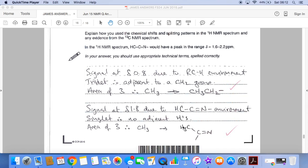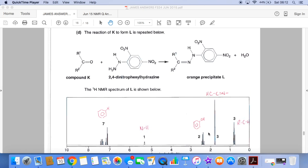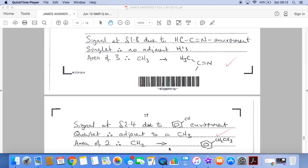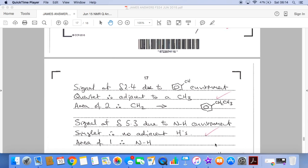If you look at that, one of our R groups is sorted already because it's a CH3 group. The signal at delta 2.4 is due to a benzene ring with CH attached. It's a quartet, so it must be adjacent to a CH3. It's got an area of 2, so it must be 2 in the environment. We must have this CH2-CH3 attached to benzene in our molecule. The signal at delta 5.3 is due to an NH environment. It's a singlet, no adjacent hydrogens, and an area of 1.